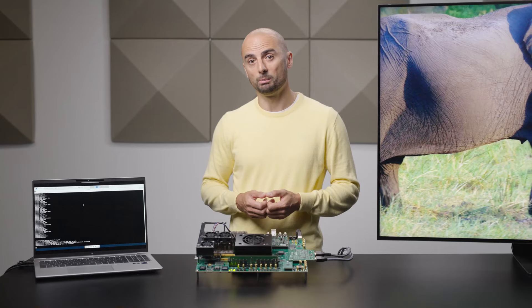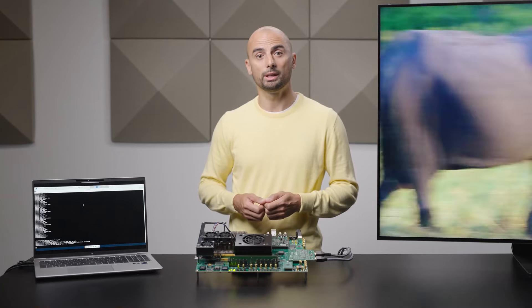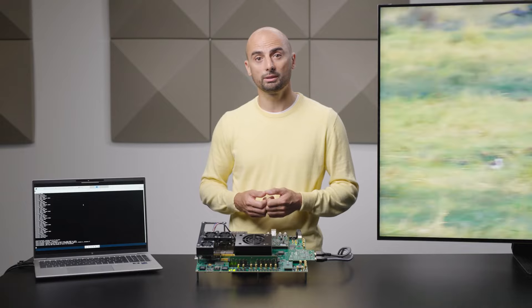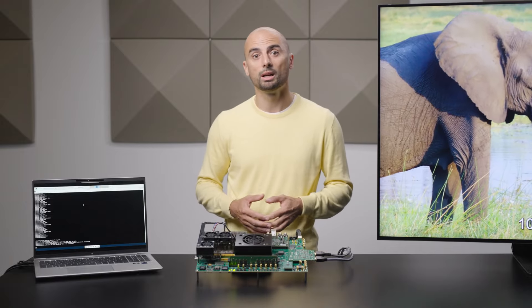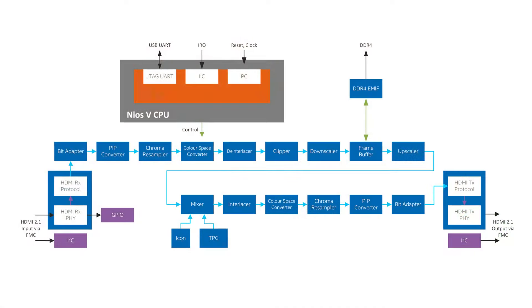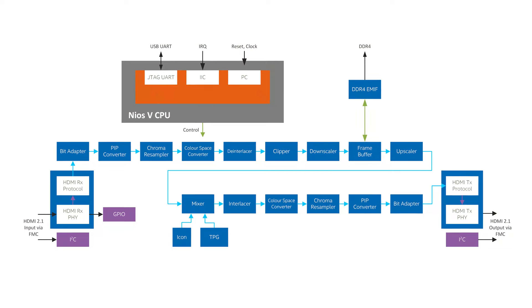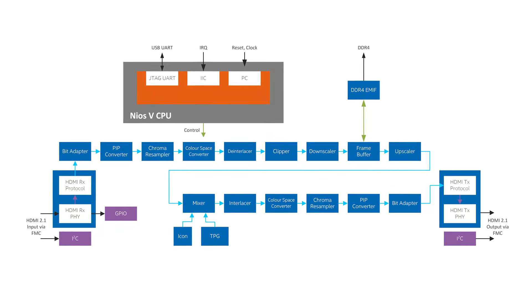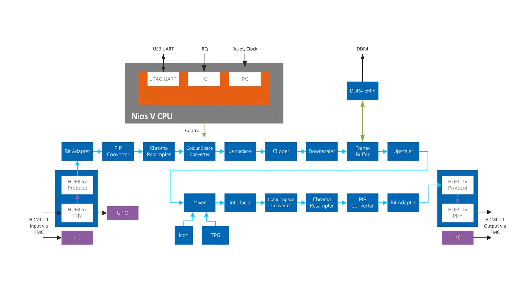This design example is intended to show how the Intel HDMI 2.1 connectivity IP cores can be combined with the IP cores from the Video and Vision Processing IP Suite to create a representative video format conversion system.